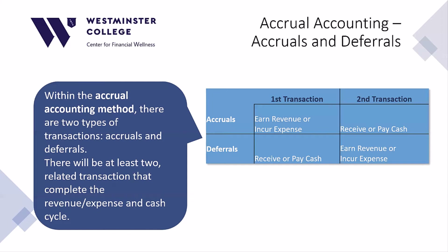Whereas in the last lesson we earned the revenue and received the cash in the same transaction, with accrual accounting the earning or incurring will happen in one transaction and the cash will be exchanged in another related transaction. If the earned or incurred process happens first, with cash being exchanged later, this is called an accrual type transaction.